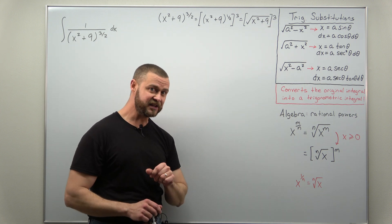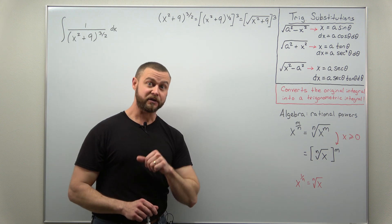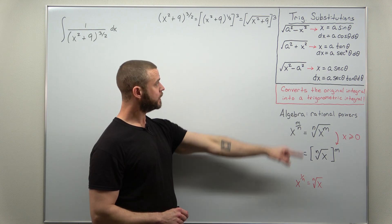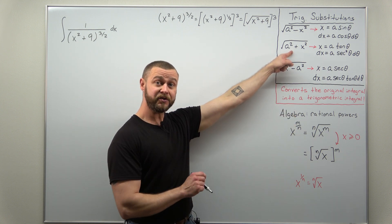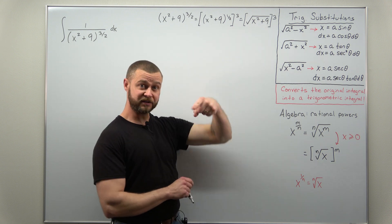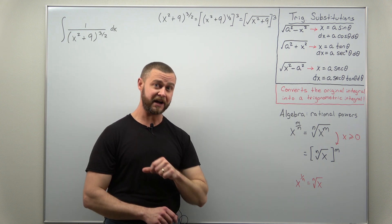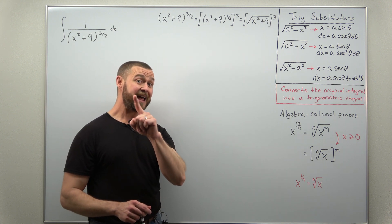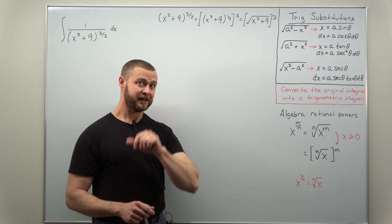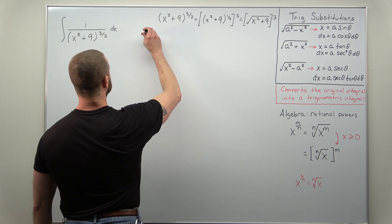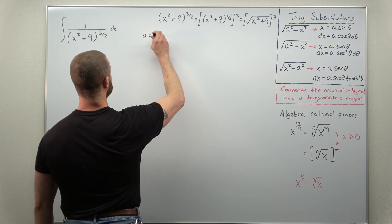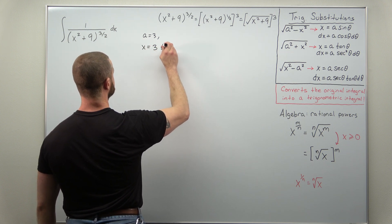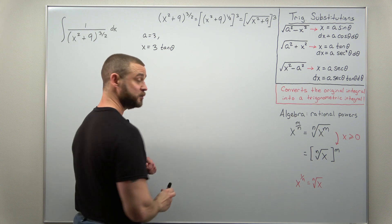That rewriting makes it easy to determine our substitution. We have the square root of x² plus a number, which corresponds to a tangent substitution. The number inside with x² is 9, and since 9 = 3², we use the substitution x = 3 tan θ, recognizing a = 3.